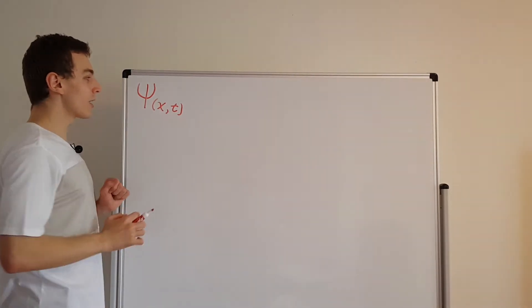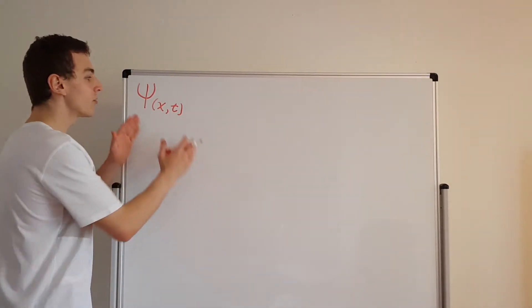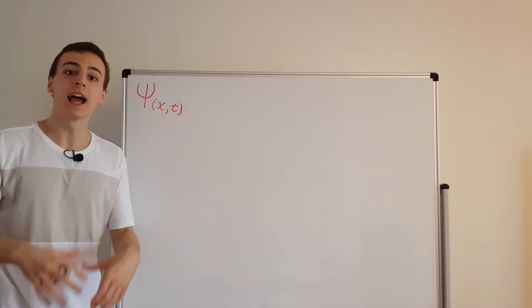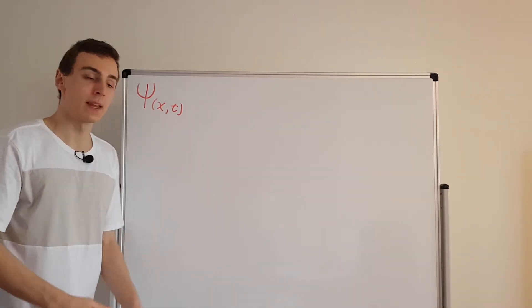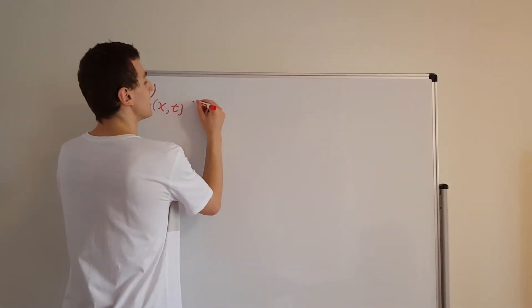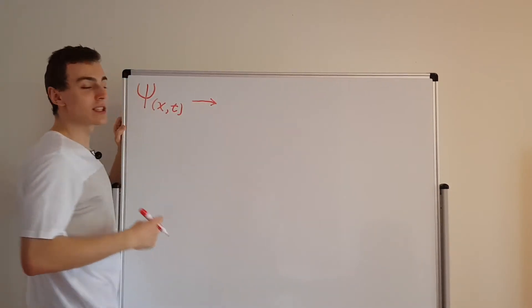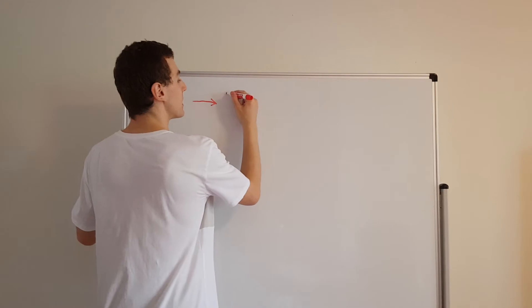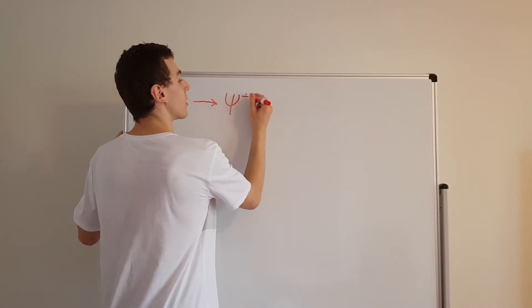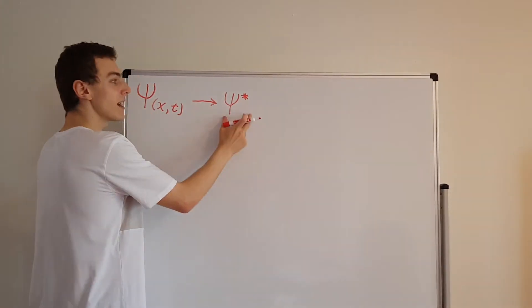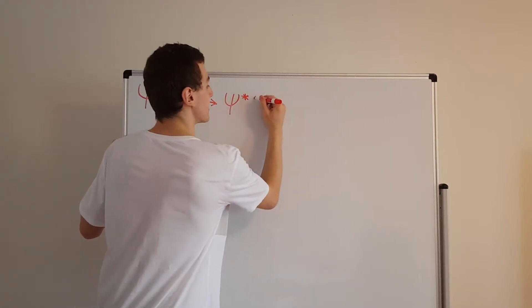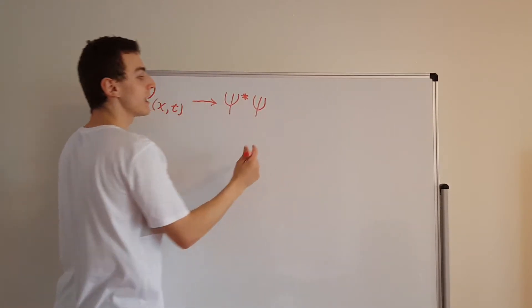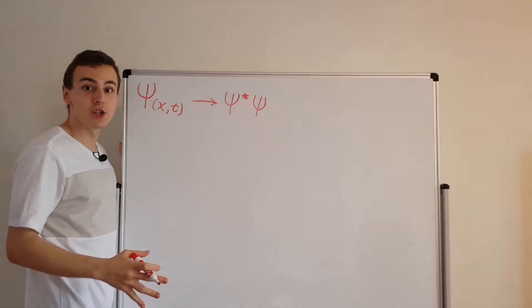But what I want to get across in this video is how you can go from the wave function to something that can be interpreted as a probability. So what you have to do is you have to take the complex conjugate of all of the values for this function. And that's represented by psi star. And if you take psi star and you multiply it by psi, that's actually going to give you the square of the magnitude.